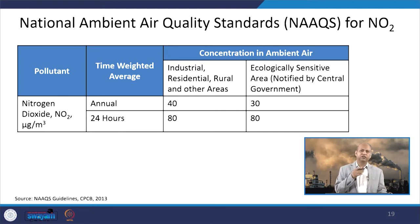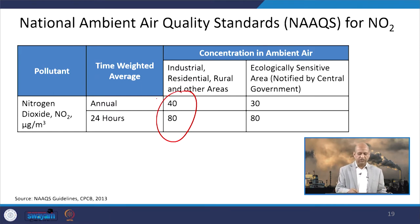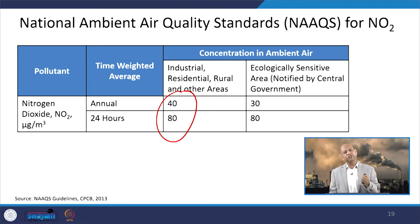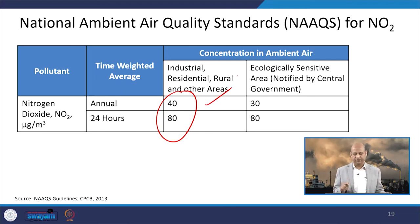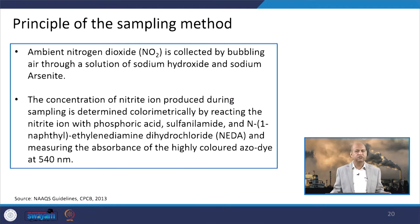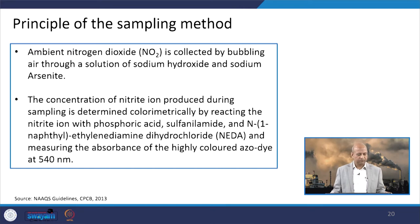Looking at the National Ambient Air Quality Standards for NO2: for industrial, residential, and rural areas the annual average is 40 micrograms per cubic meter and the 24-hour average is 80 micrograms per cubic meter — these values should not be exceeded. For ecologically sensitive areas it is 30 annual and 80 for 24 hours. The annual value is lower and more stringent because inhaling polluted air continuously creates problems in our body.